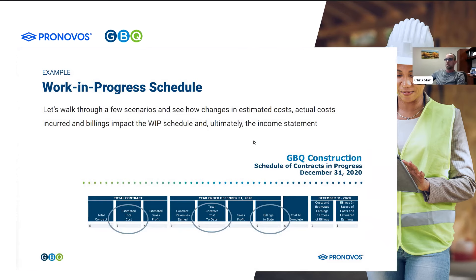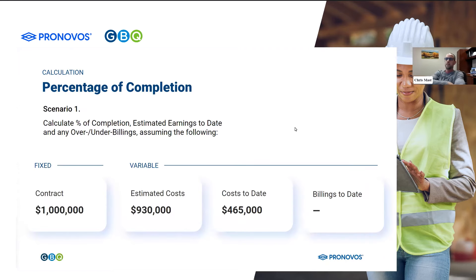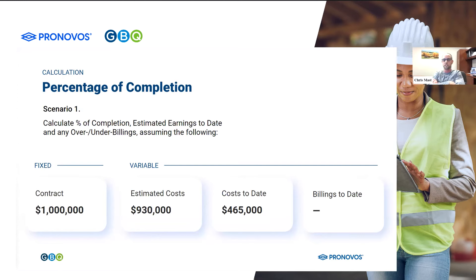So this first one: you've got a million dollar contract, estimated costs of $930,000, and you've incurred costs to date of $465,000. But you've been able to bill nothing so far — for whatever reason, you haven't been able to send a bill.